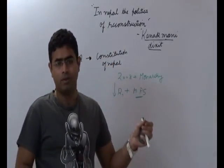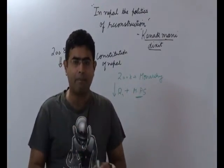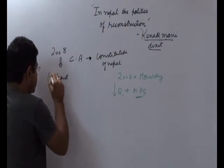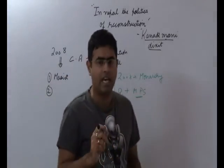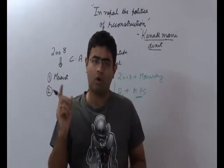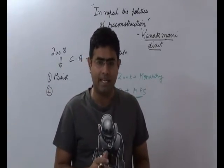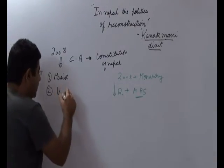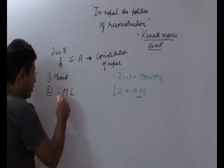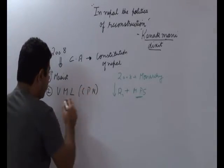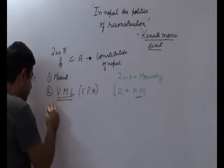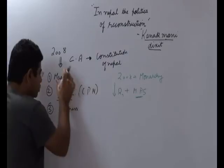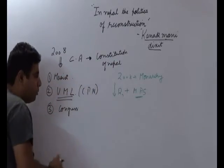The result of the 2008 election gave a clear mandate to the Maoists. The Maoists gained the maximum number of seats in the Constituent Assembly. The second political party was the UML - Communist Party of Nepal Unified Marxist Leninist party. The third party was the Congress. These are broadly the three political parties fighting with each other to design the Constitution of Nepal.